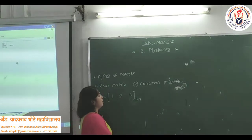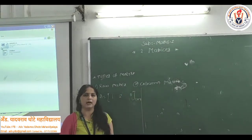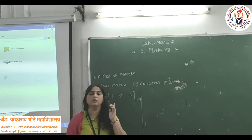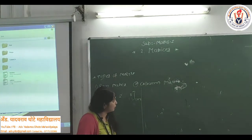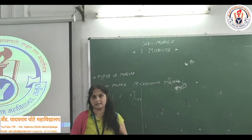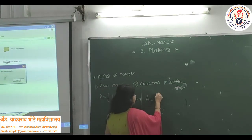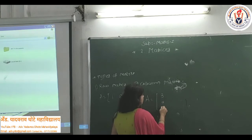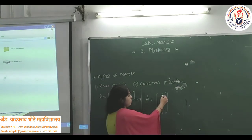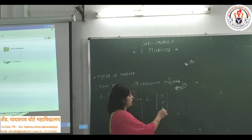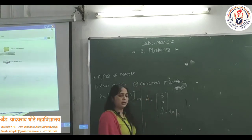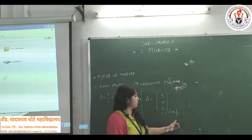Next, the second type is Column Matrix. A matrix having only one column is called a column matrix. For example, [3, 0, 7] is an example of a column matrix, because there is only one column and three rows. So its order is 3 by 1.